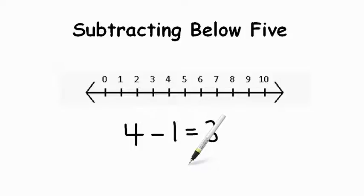Another way to look at this is to use a number line. So we started at 4, and we took away 1. We went back 1. So we go from 4, and we go back 1, we land on 3. So 4 take away 1 equals 3.